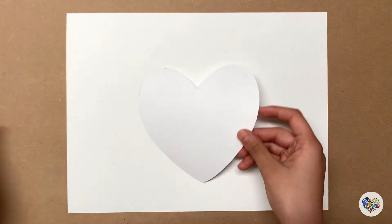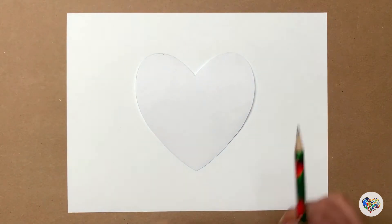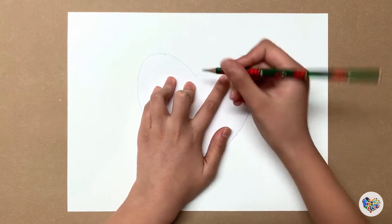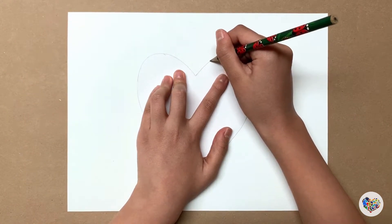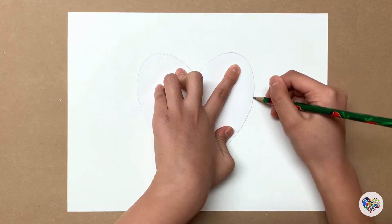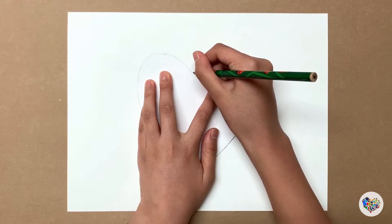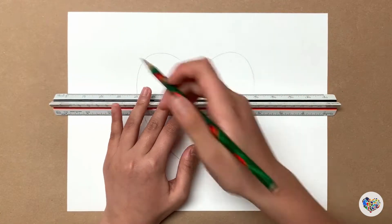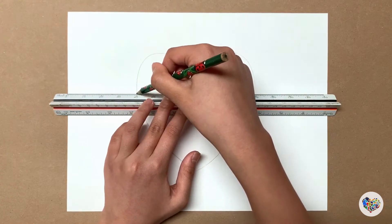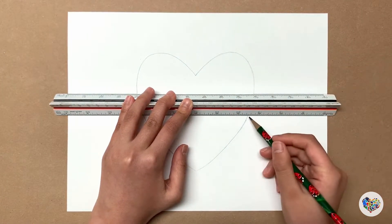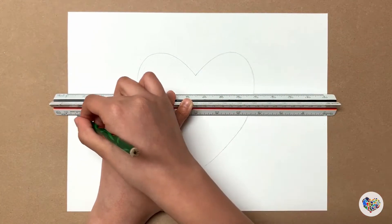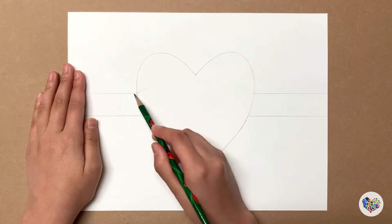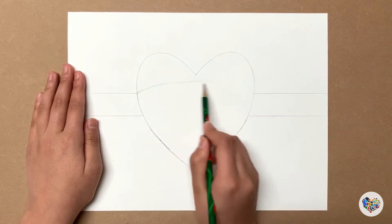First, draw a heart in the middle of the paper with a pencil. Use a ruler to draw horizontal lines on each side of the heart. Draw curved lines inside of the heart to make it look 3D.